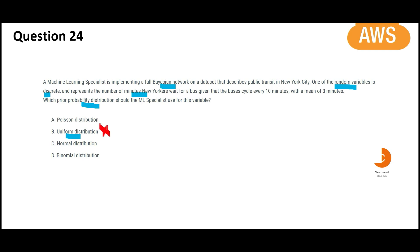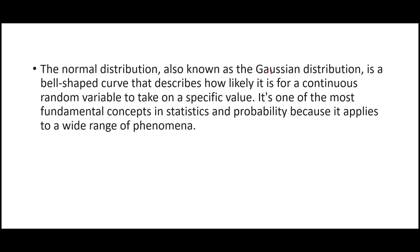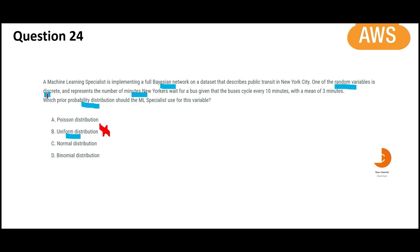What about normal distribution? It is also called Gaussian distribution. It creates a bell-shaped curve. Primarily for continuous random variable. But our random variable is not continuous. Our random variable is discrete. So we cannot use this bell-shaped normal distribution.